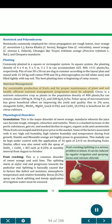Nutrient Management: For sustainable production and proper maintenance of plant and soil health, an efficient nutrient management program must be adopted. Citrus is a nutrient-exhaustive crop; plants at 400 plants/ha can remove about 200 kg N, 50 kg P₂O₅ and 200 kg K₂O per hectare. Foliar spray of micronutrients has given beneficial effects on improving yield and quality. 1–2% urea along with ZnSO₄, MnSO₄, MgSO₄, each at 0.5%, and CuSO₄ at 0.25%, is beneficial for all citrus cultivars.